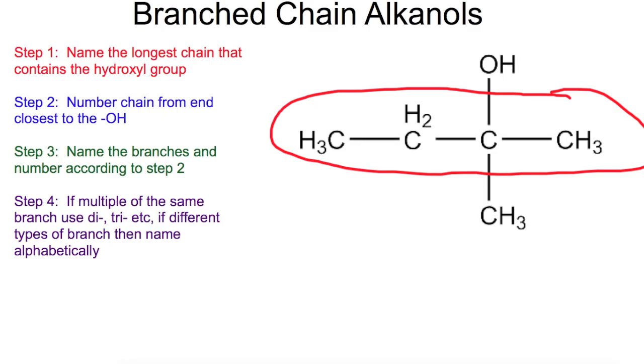The second step is to number the chain from the end closest to the hydroxyl. So we're going to have one, two, three, four. So if we didn't have this branch here this would be butan 2-ol. So we're going to just write that out underneath.